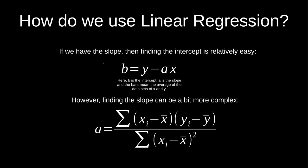So here's the formula. Instead of using m and b, we're going to use a and b — same thing. The y-intercept is pretty easy once you have the slope. So b is the y-intercept. Y-bar means the average of the data set. There's going to be an x data set and a y data set. The x data set is the input data and y data is the output data. You're going to take in the x data and try to predict the y data.